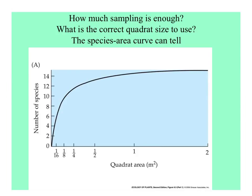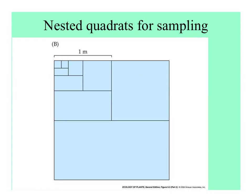Plant ecologists often use quadrats — four-sided, usually square-shaped sampling units. These are nested for measuring plants of different sizes. You might sample trees with 10-by-10-meter plots, shrubs with 4-by-4 or 2-by-2-meter plots, and smaller plants with 1-by-1-meter plots or even smaller, depending on plant size and height.